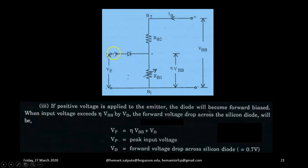Because across this diode on left side there is a voltage VE and on right side there will be a voltage eta VBB. So this diode will become forward biased only when its anode goes higher than the cathode voltage. The cathode voltage is eta VBB. So when VE is greater than eta VBB then and then only the diode will become forward biased. So VP peak voltage will be equal to eta VBB plus VD where VP is the peak input voltage and VD will be the forward voltage drop across this silicon diode which is 0.7V.